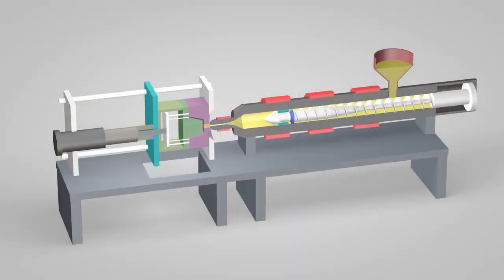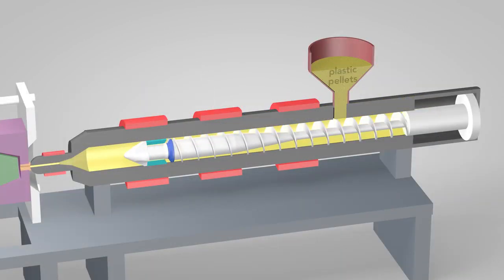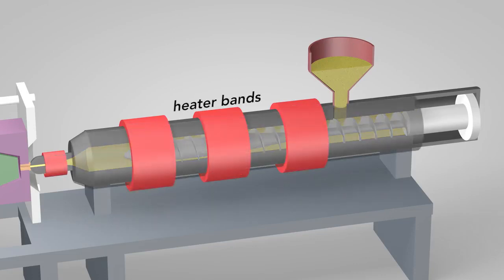An injection molding machine has three main parts: the injection unit, the mold, and the clamp. Plastic pellets in the hopper feed into the barrel of the injection unit. Inside the barrel, a screw transports the pellets forward. Heater bands wrapped around the barrel warm up the plastic pellets.